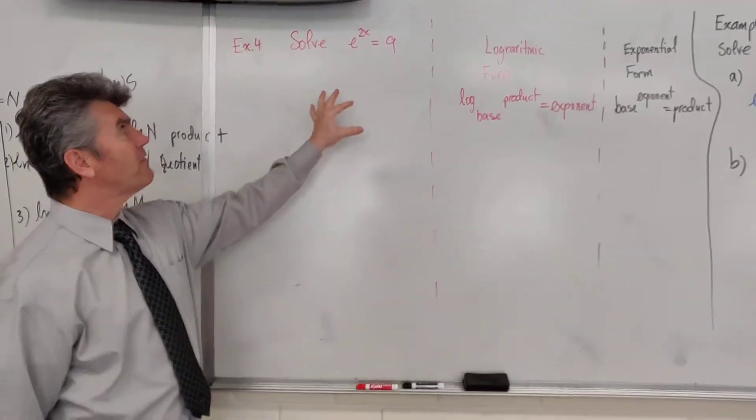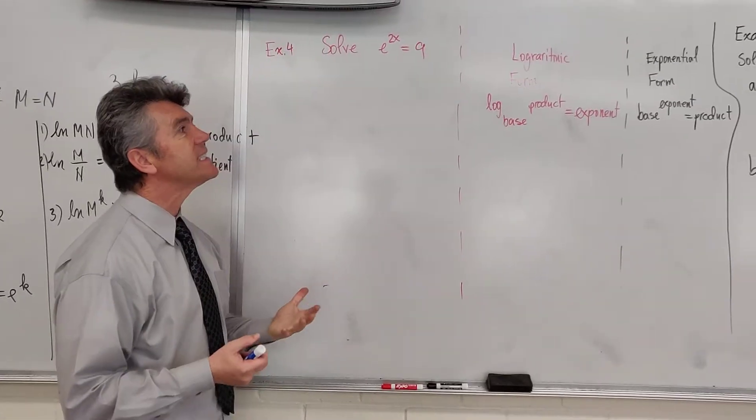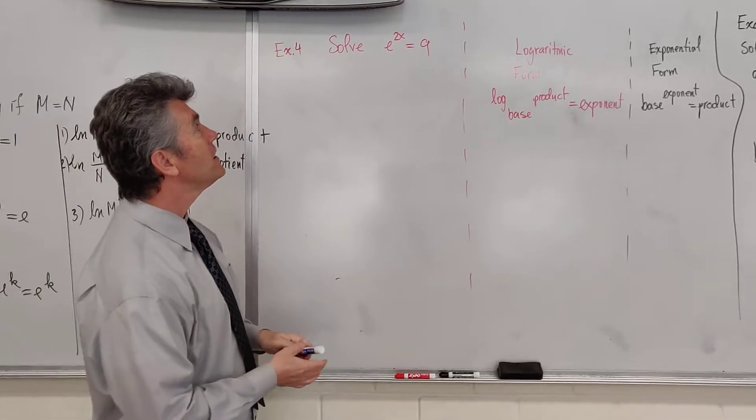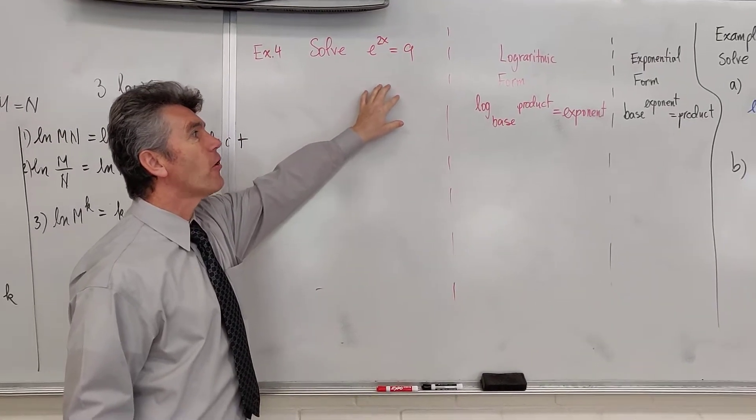Let's take a look at example 4. In example 4, now we have e raised to the power of 2x is equal to 9. What are we going to do? We started with an equation that is in exponential form.